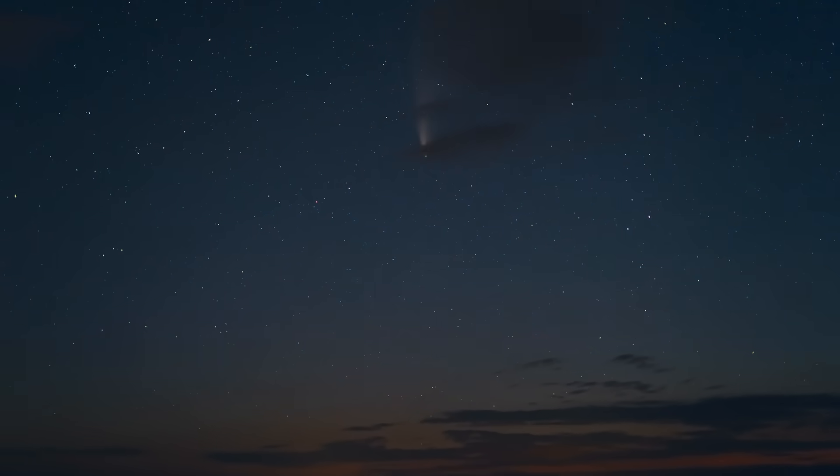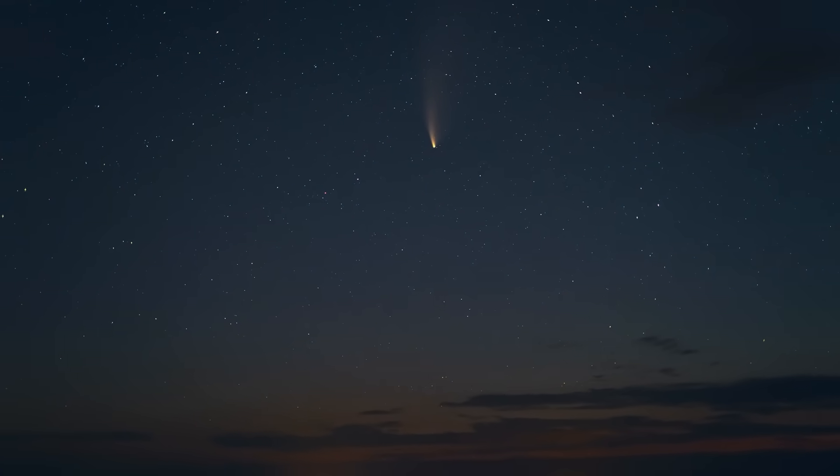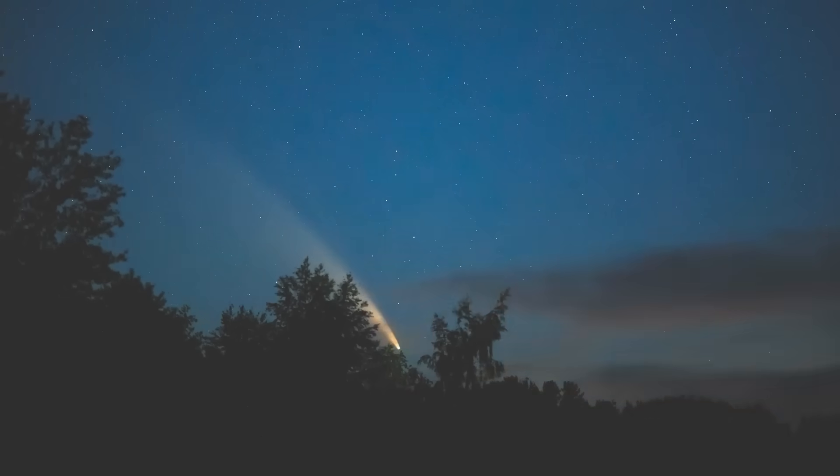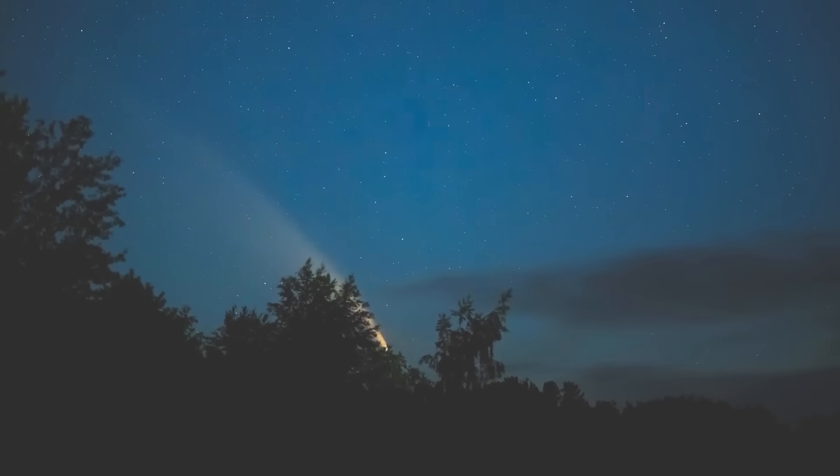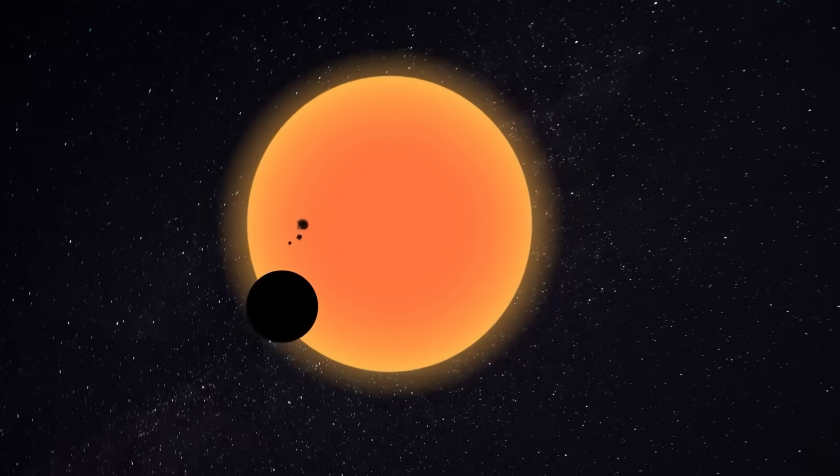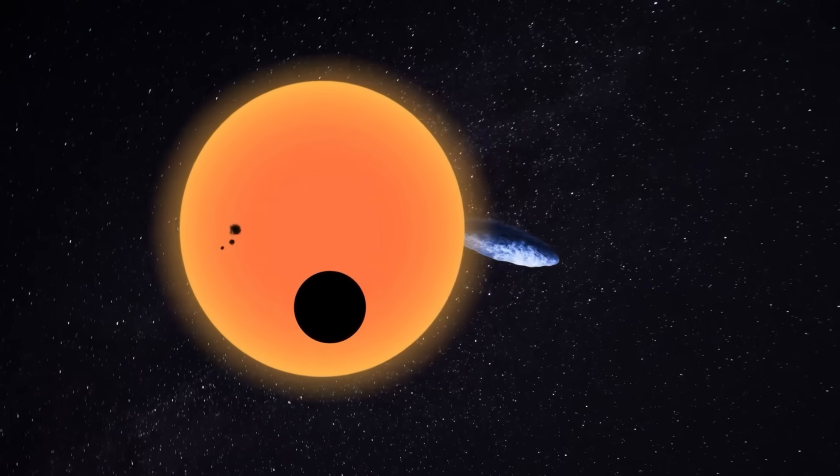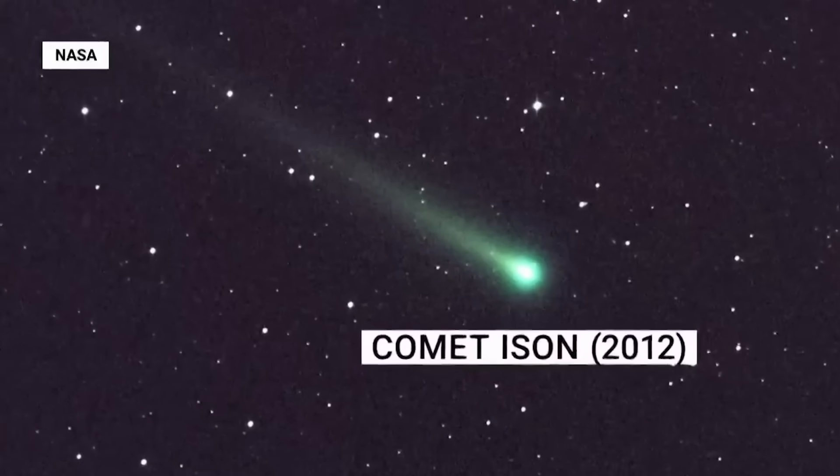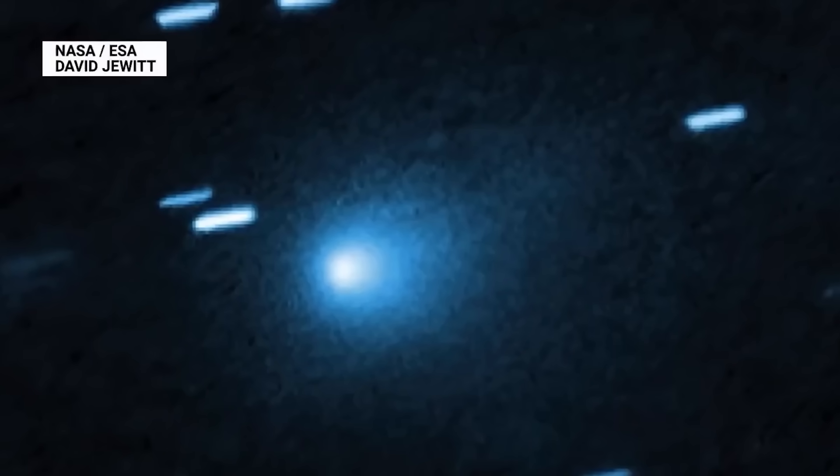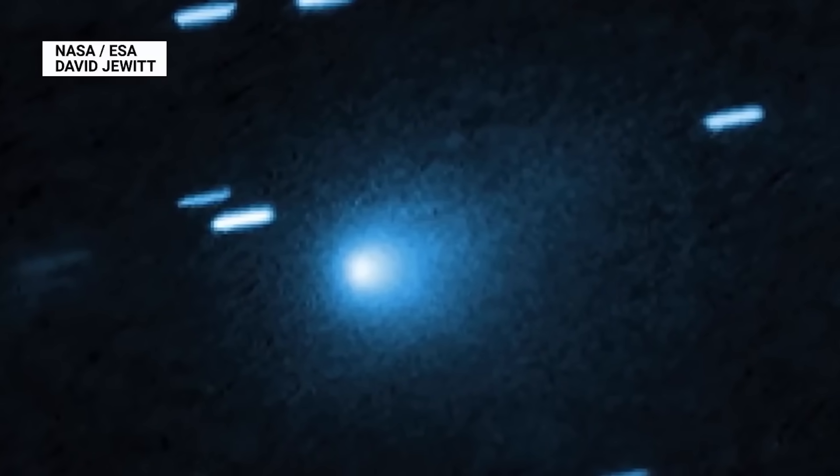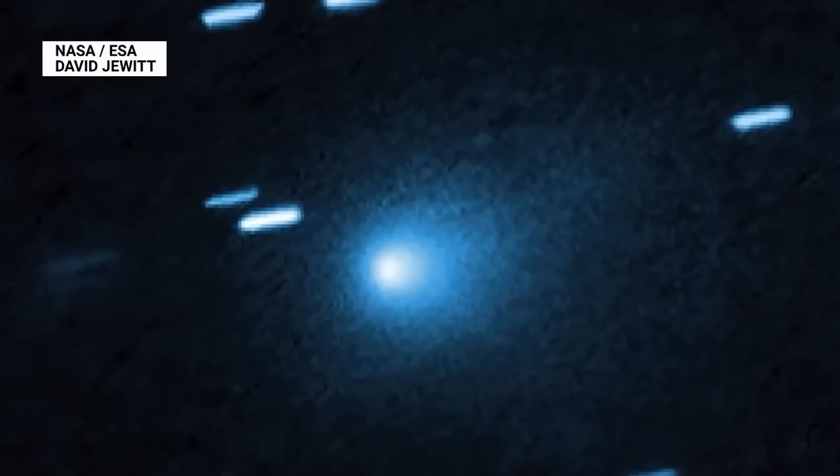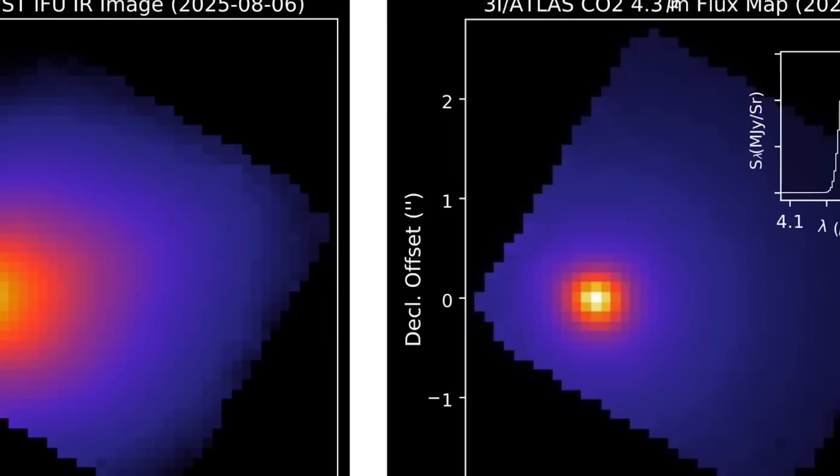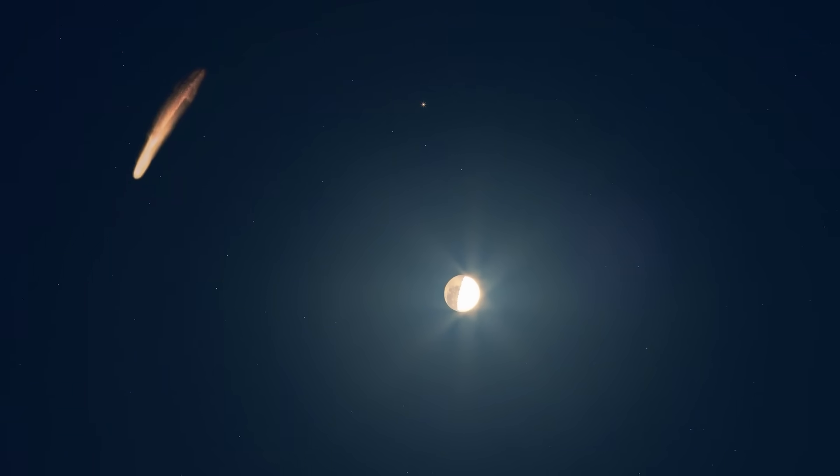So now you have two independent lines of evidence. The orbit says the net force rotated. The images show the jets rotated with it. That's not a processing error. That's not coincidence. That's a physical change happening right now. And once you accept that, the real question becomes unavoidable. Why does this keep happening? Because whatever is driving these changes is inside the nucleus. And we can't see inside the nucleus. Not directly. We can only infer it from the way it pushes itself through space.